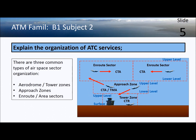The approach departure zone has an upper and a lower level, so it's a 3D volume of airspace above the surface. Then finally we have the en route sectors for long-distance flying at cruise altitude.